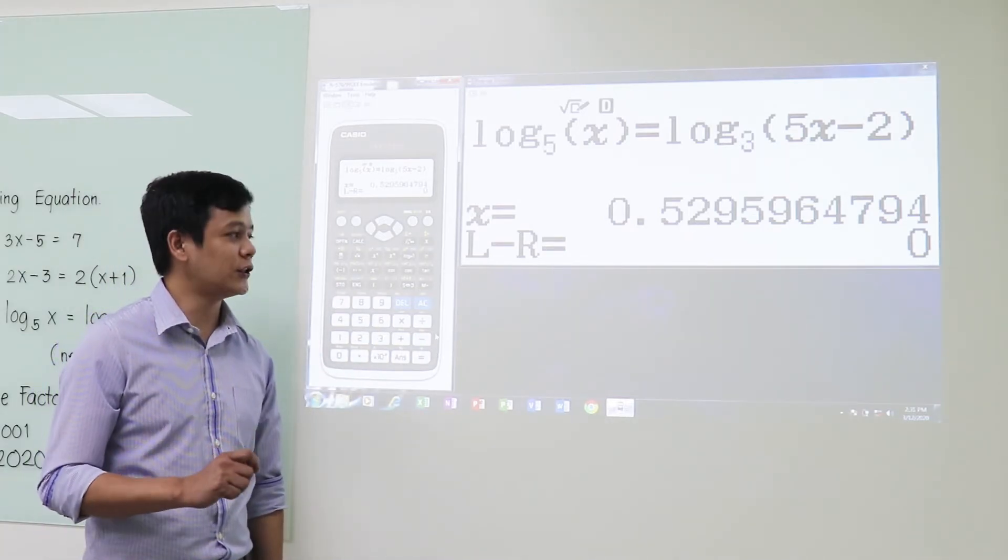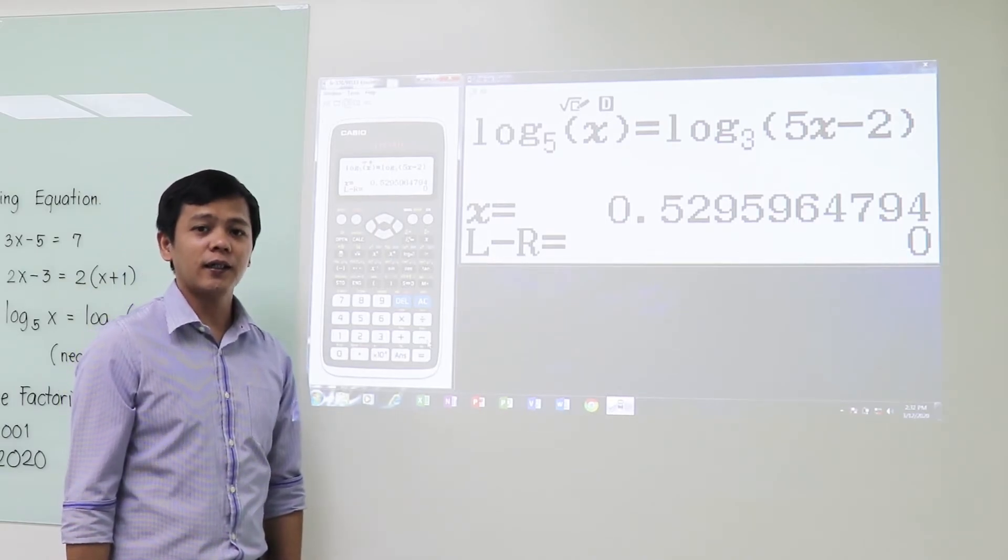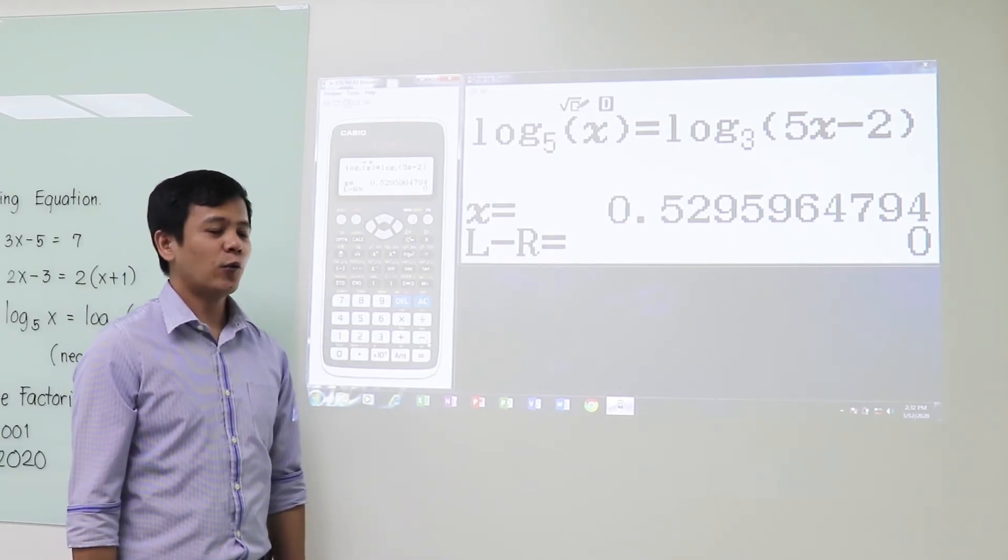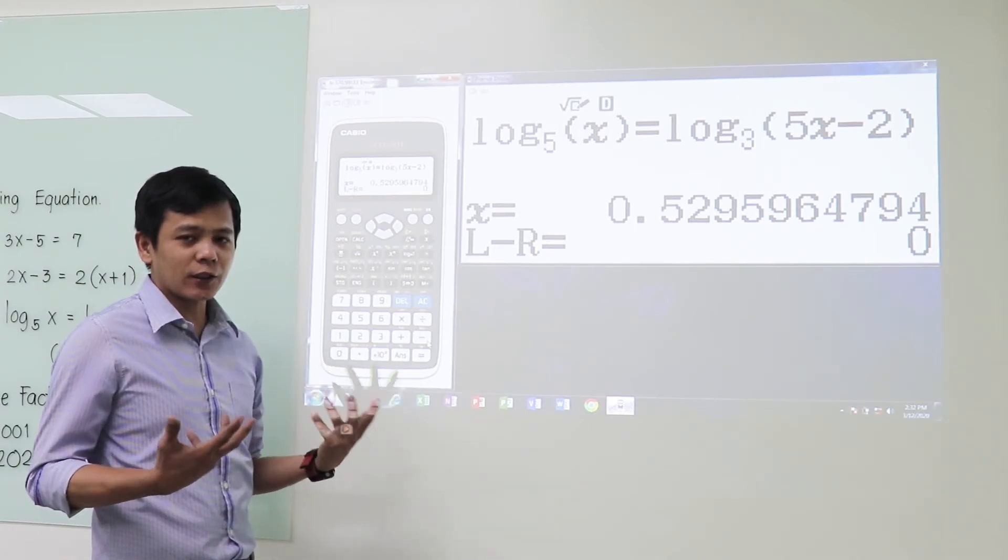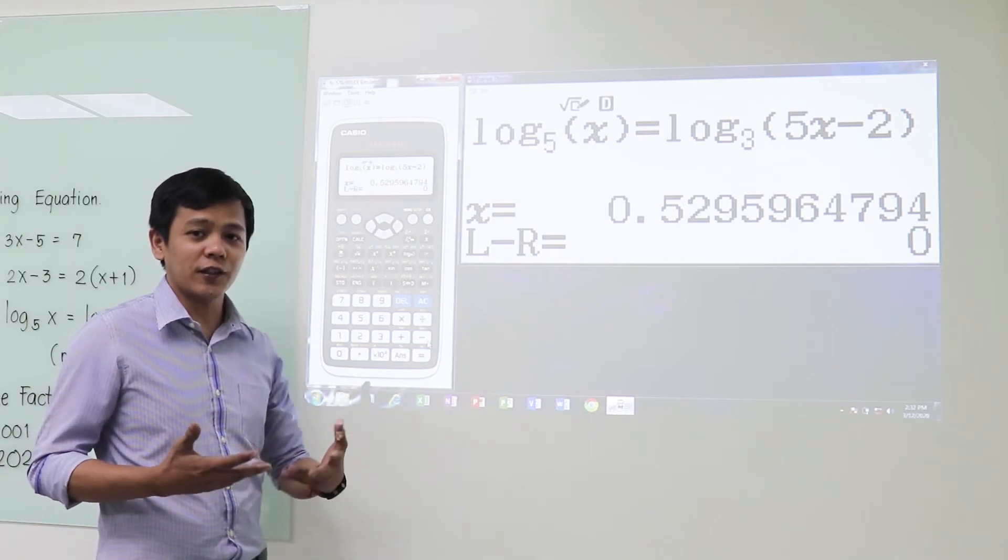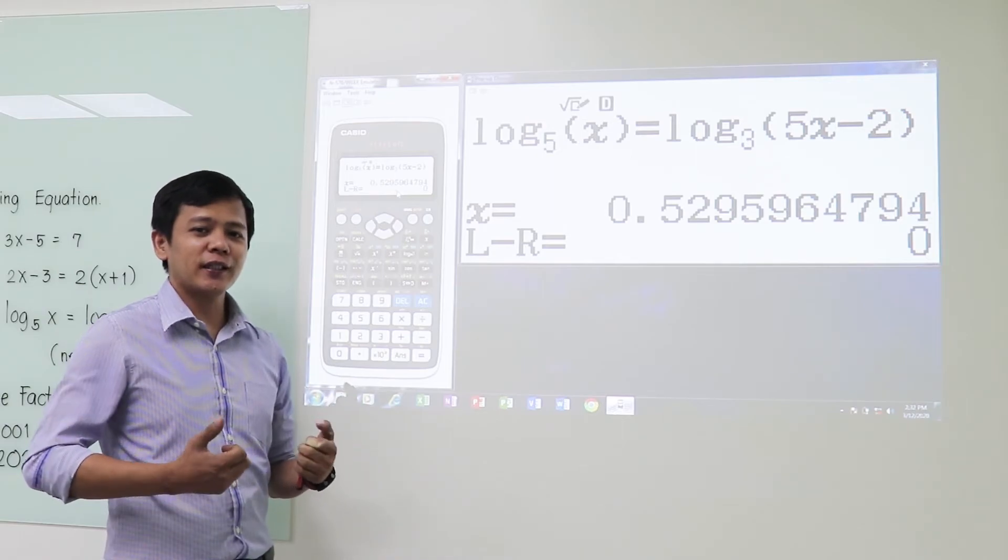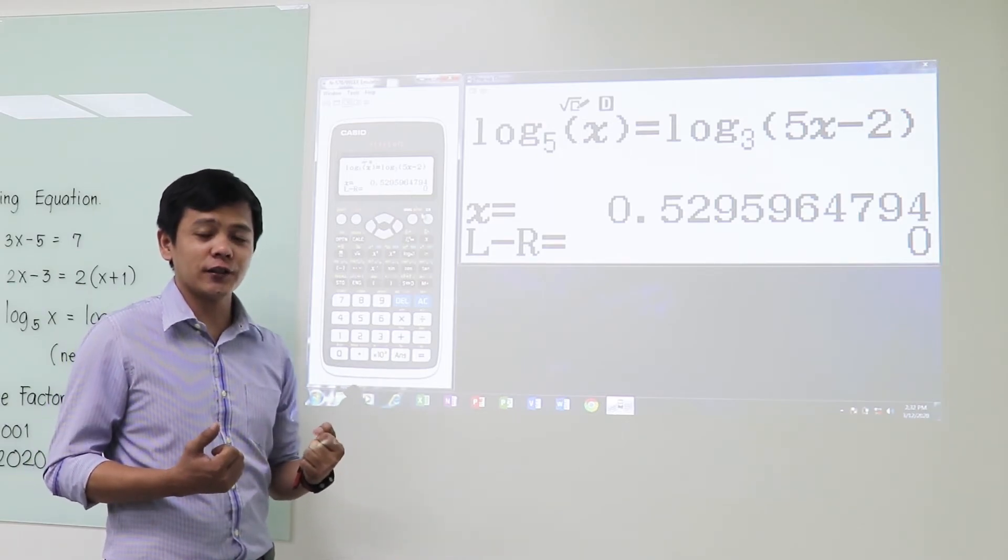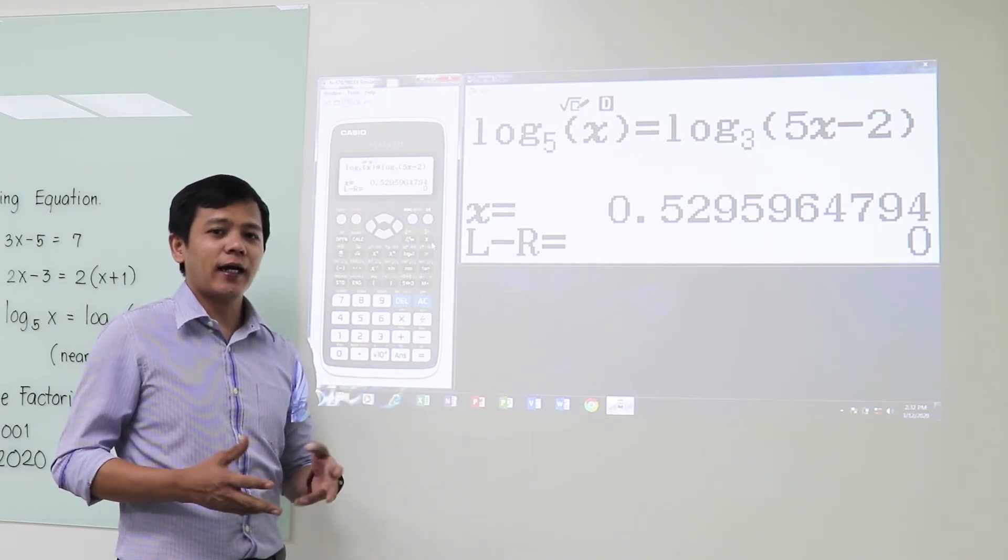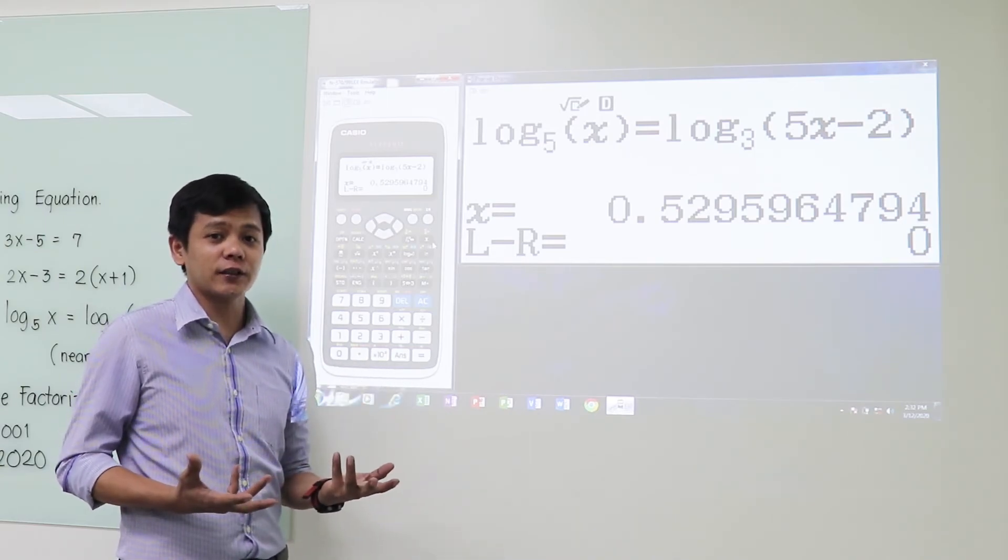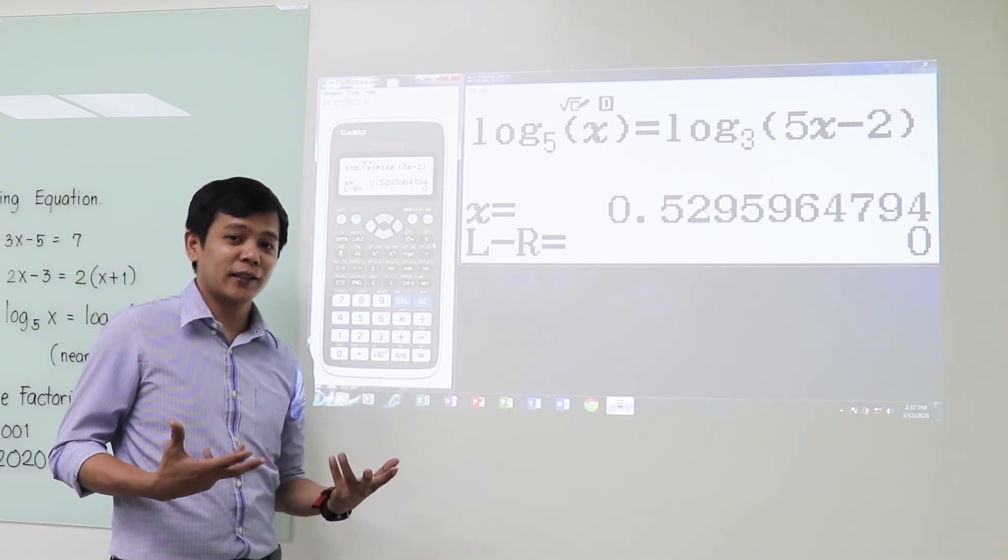All right, so that's the answer. Since we need the answer to be to the nearest hundredths, so the final answer that we're going to write in our answer sheet is 0.53 or 53 hundredths. Okay, why did we use or why did we choose these three equations? Simply because these equations are one-to-one functions. So as you can see, calculation mode can solve a lot of one-to-one functions. What if we're going to solve equations having a lot of answers? Can we still use this calculation mode? The answer is yes, but again, it will only give you one possible answer.